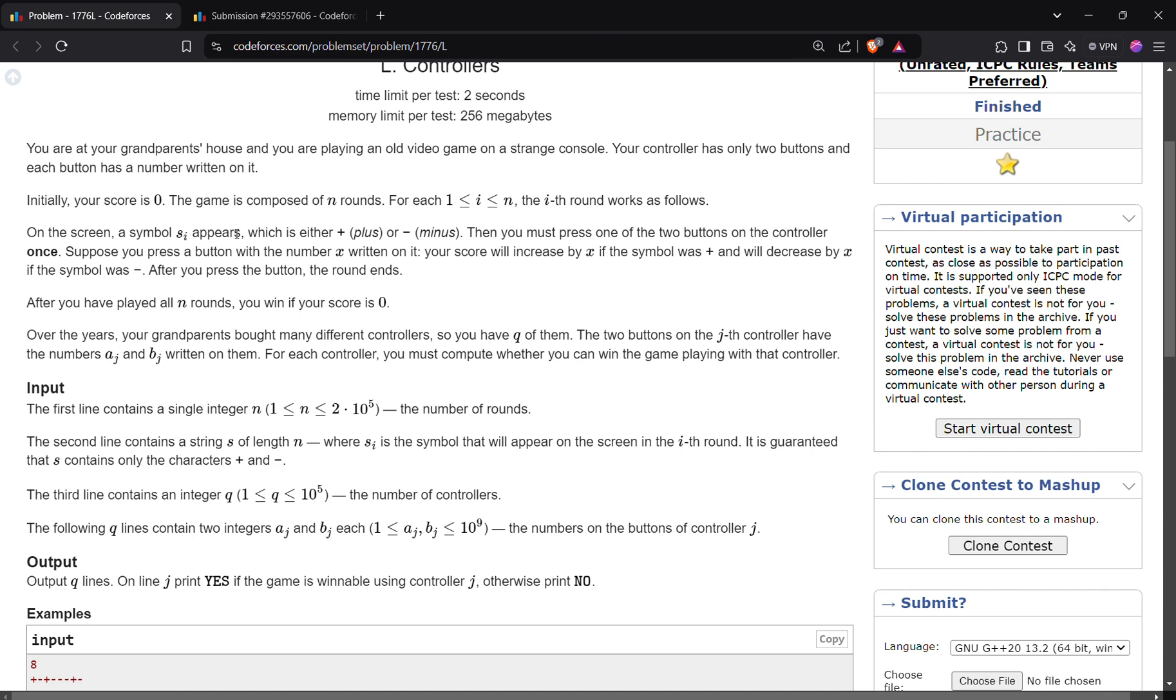Which is either plus or minus. We have to press only one button out of those two buttons exactly one time. If you press a button with the number X written on it, your score will increase by X if the symbol was plus and it will decrease by X if the symbol was minus. After you press the button, the corresponding round ends.